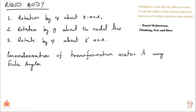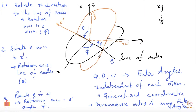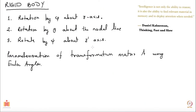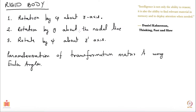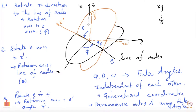Rotation by phi about the z axis — the first rotation was about the z axis by an angle phi. Then you had rotation by theta about the nodal line: you took the z axis and brought it to its new position z-prime by rotating by an angle theta about the line of nodes. Then the final rotation was by angle psi about the z-prime axis. These were the things which defined the Euler angles theta, phi, and psi, and today we want to express angular velocity omega using these angles.